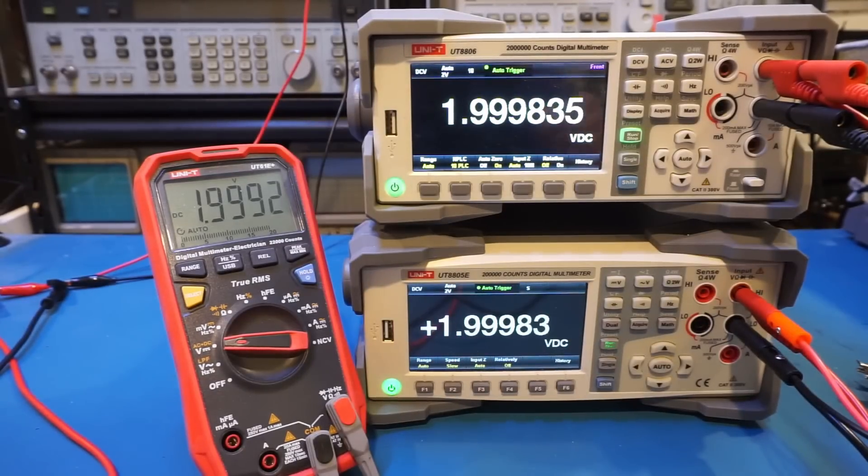So now at least you understand what digits and counts mean for a given meter. And sometimes these are just approximate numbers.